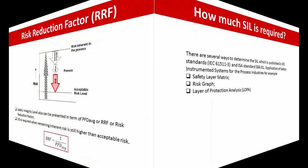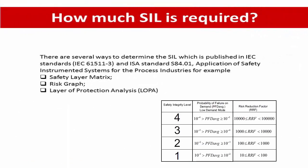How much SIL is required? As per the picture above, SIL levels are linked from one to four depending on probability of failure on demand and risk reduction factor. There are several ways to determine the SIL level, which are published by IEC 61511 and ISA S84.01, the standard for application of safety instrumented systems in the process industry. Example methodologies include the safety layer matrix, risk graph, or layer of protection analysis, or LOPA. The next video will explain how to determine the SIL level. Thank you for watching.